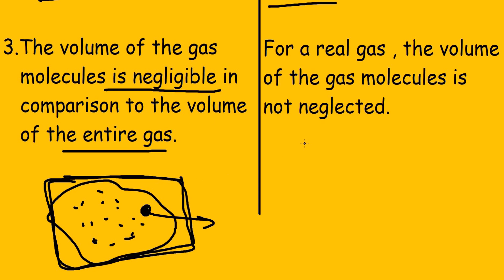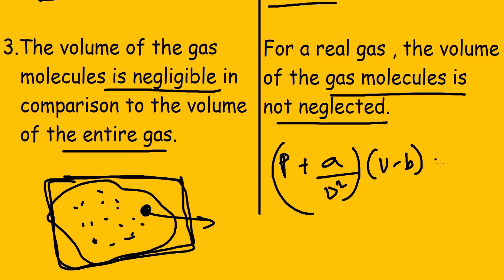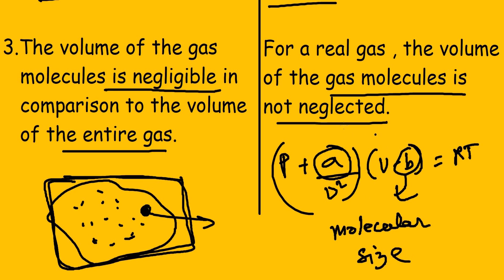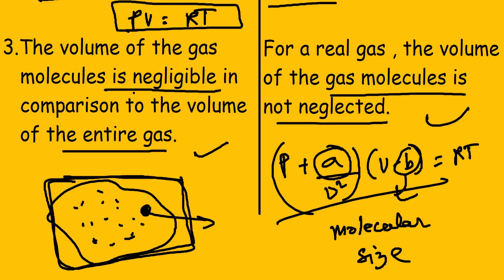For a real gas, the volume of the gas molecules is not neglected. In the Van der Waals equation — (P + a/V²)(V - b) = RT — the term b is a constant which accounts for molecular size. Clearly, the volume of individual gas molecules is not neglected for a real gas. For the ideal gas, PV equals RT contains no term for individual molecular volume.